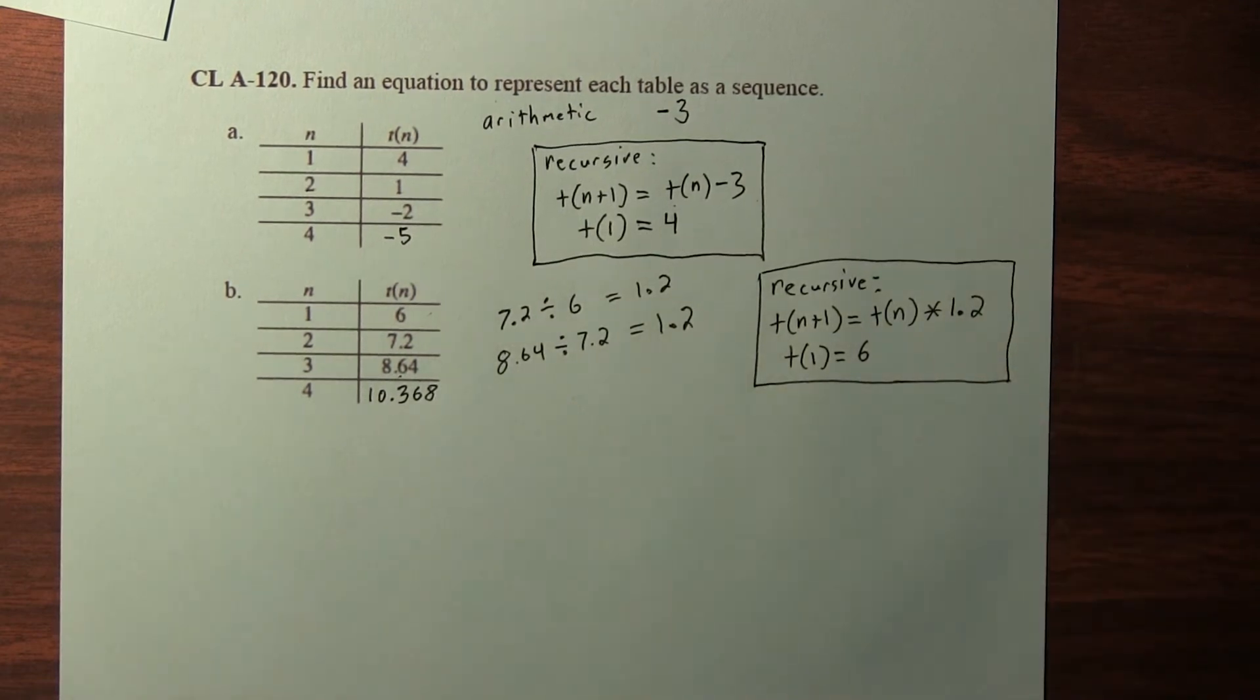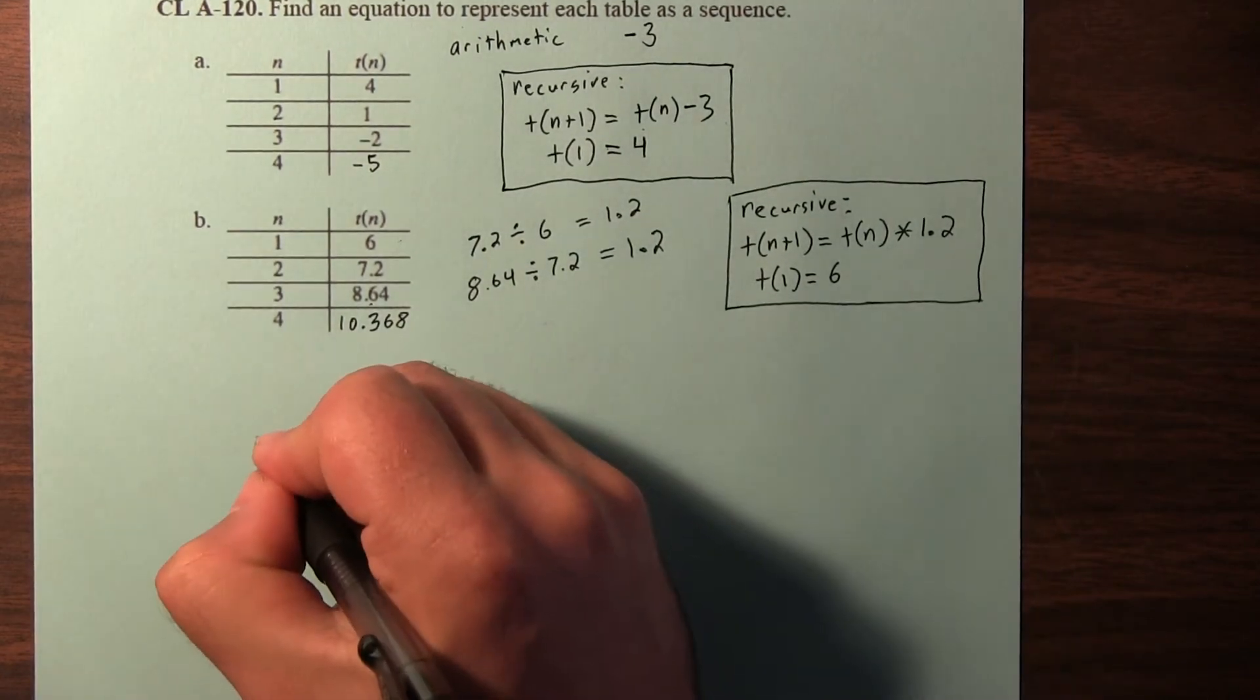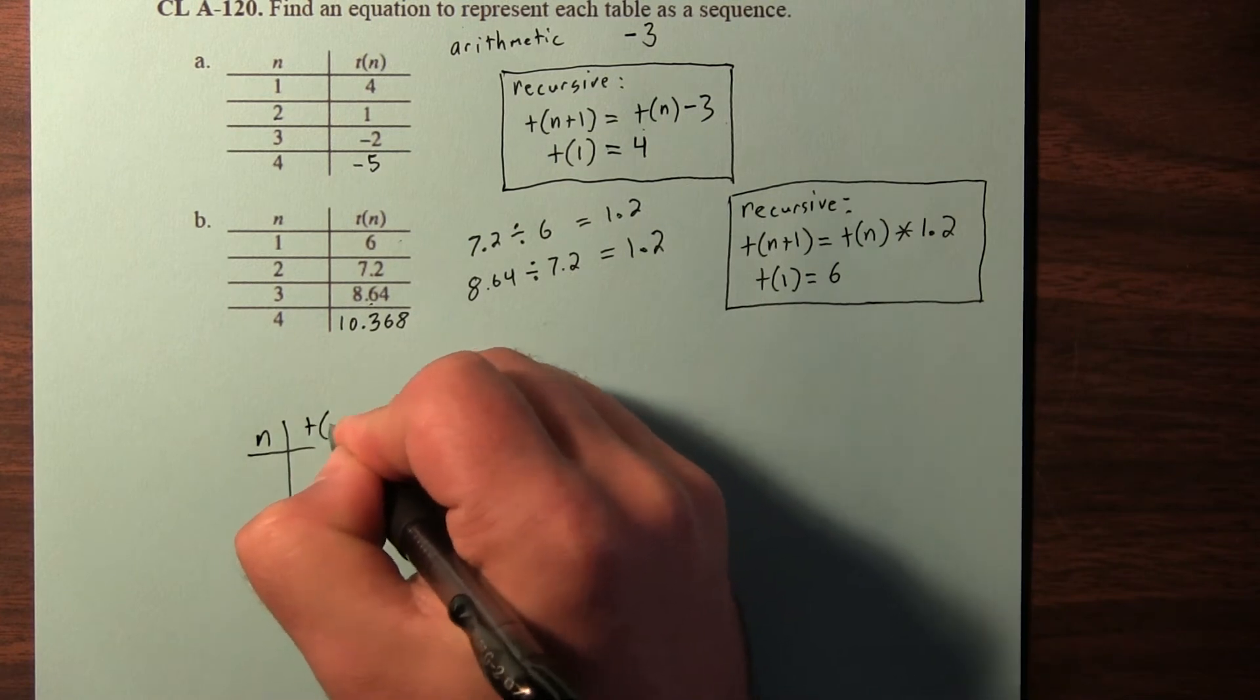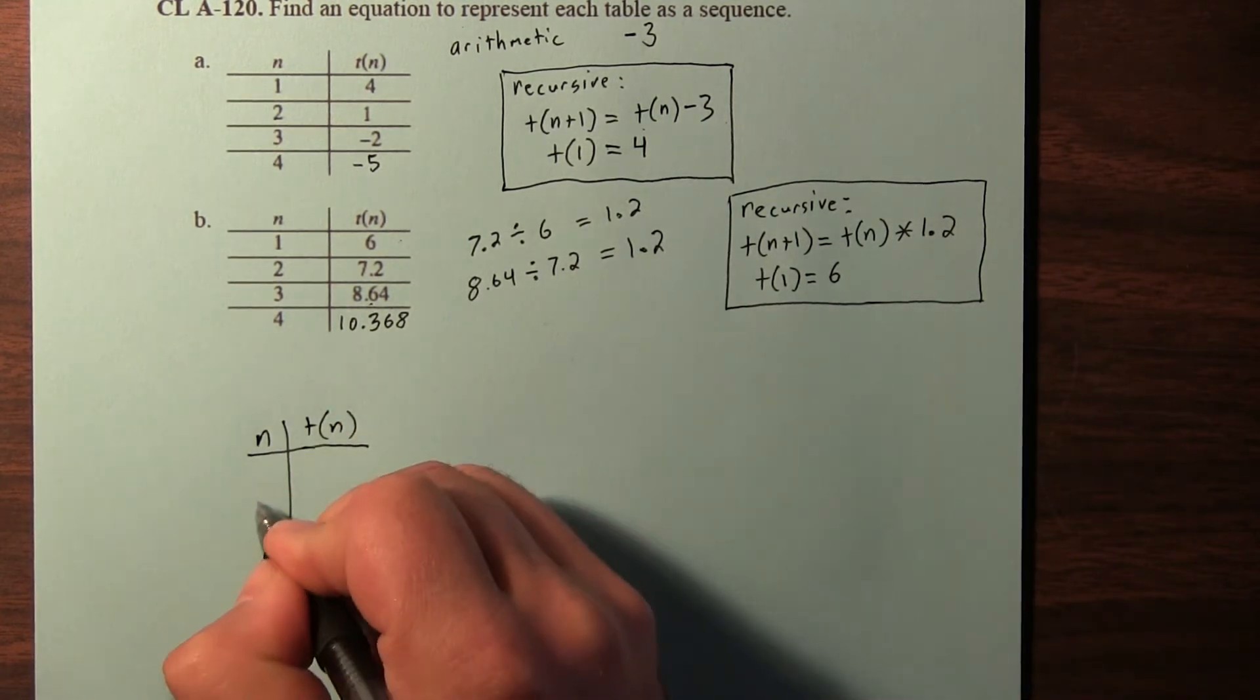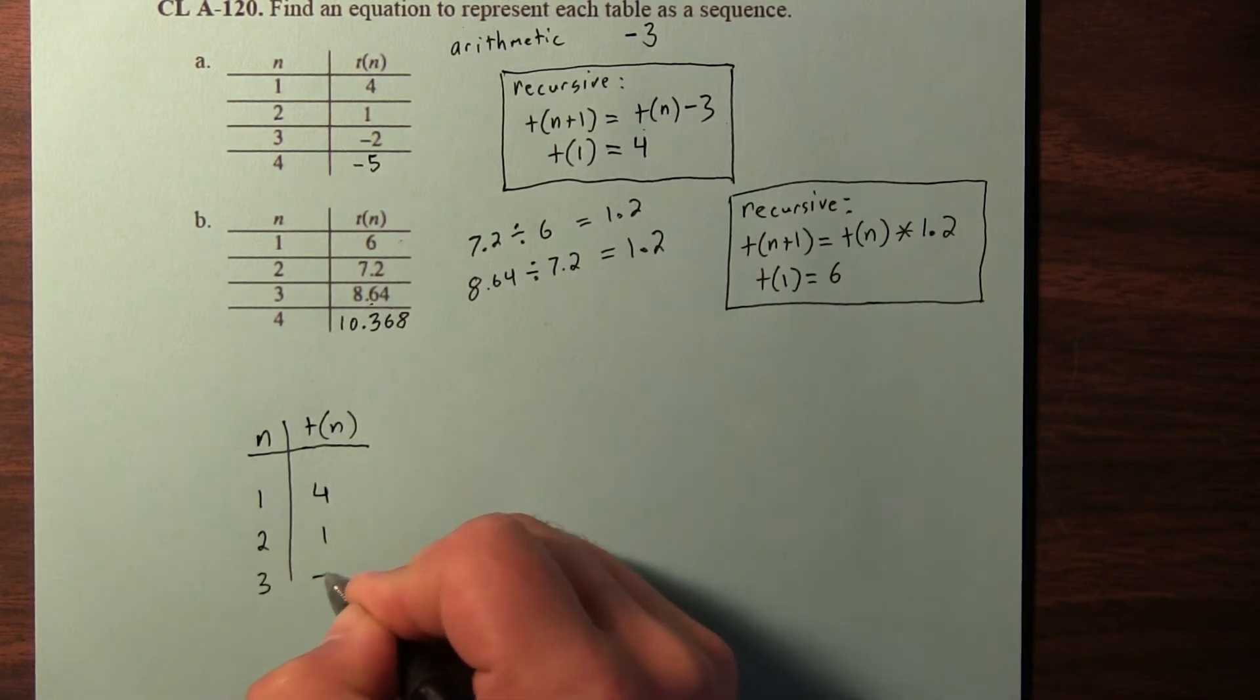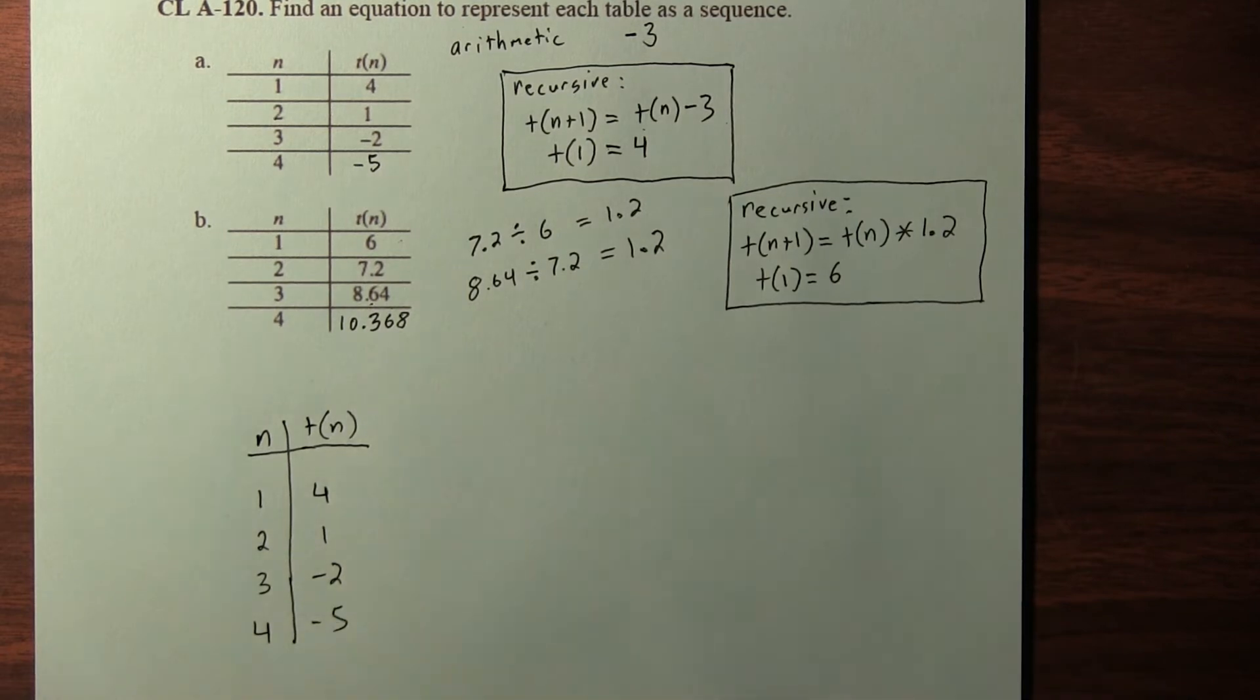Now in this problem, it didn't specify if it wants recursive or explicit equations. So we're actually going to do both. If we go back to the first problem, I'm going to reproduce the table here. So let's see, the first term was 4, the second term was 1, the third term was negative 2, and the fourth term was negative 5.